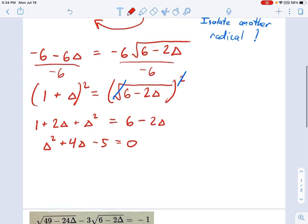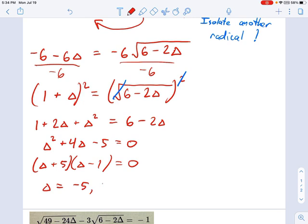And now, let's see, I can factor this. You can use the big X if you want, but I'm going to go through that a little more quickly here. This is going to be delta plus 5 and delta minus 1 equals 0. And the two solutions are negative 5 and positive 1.